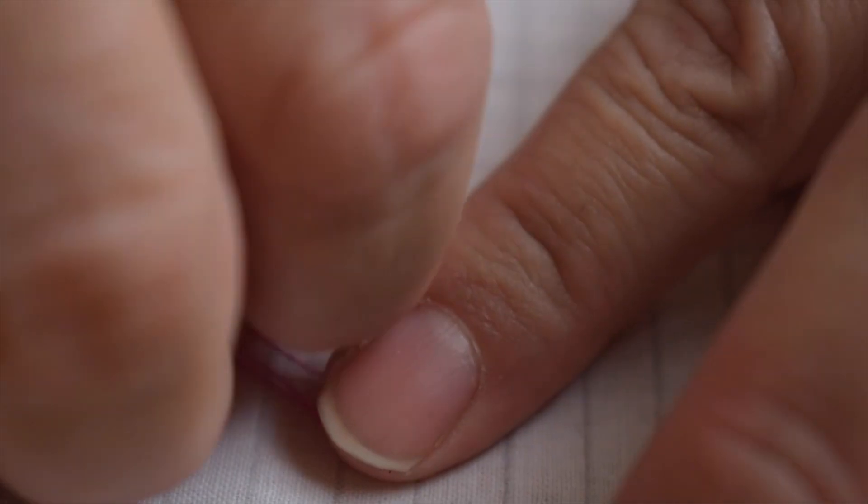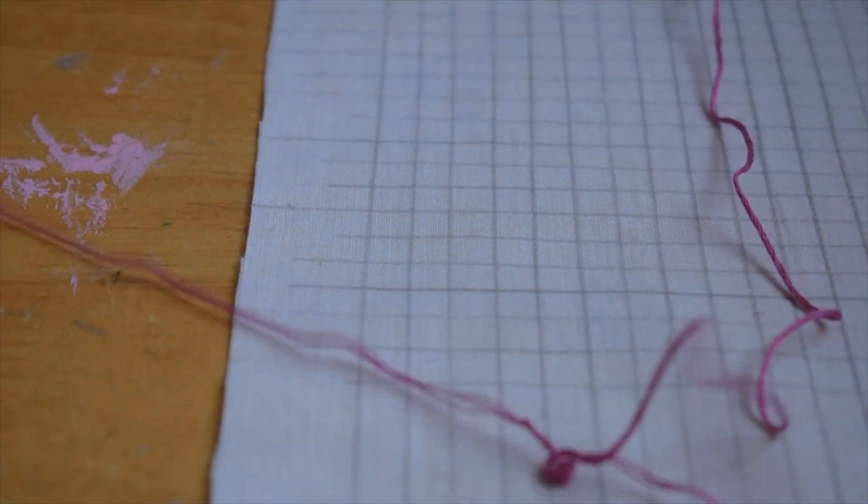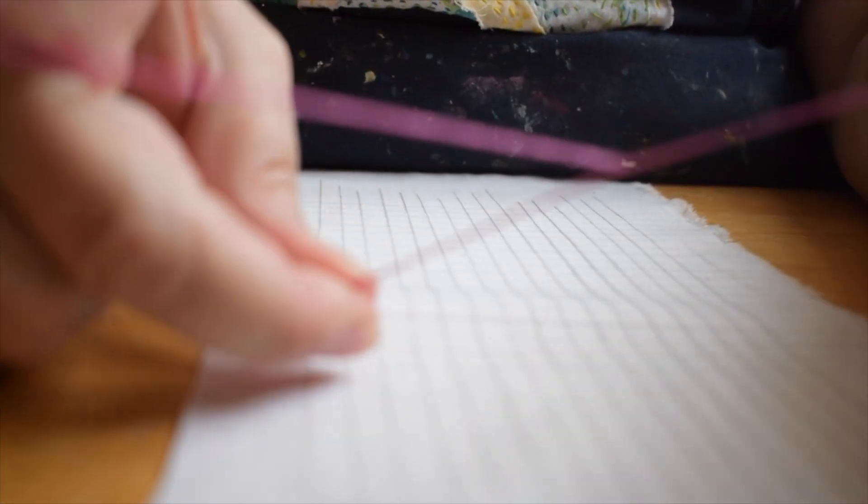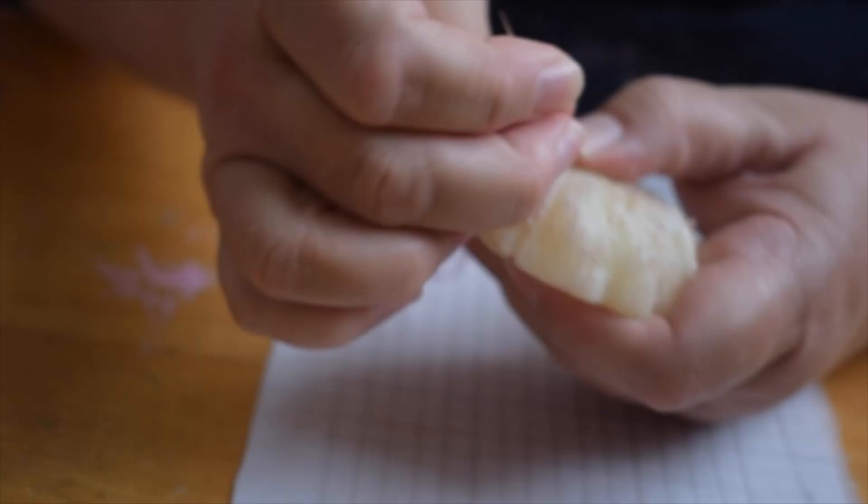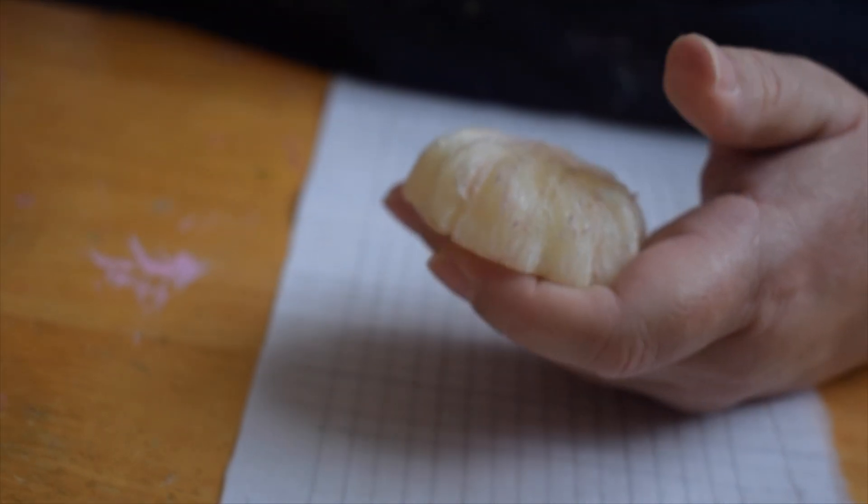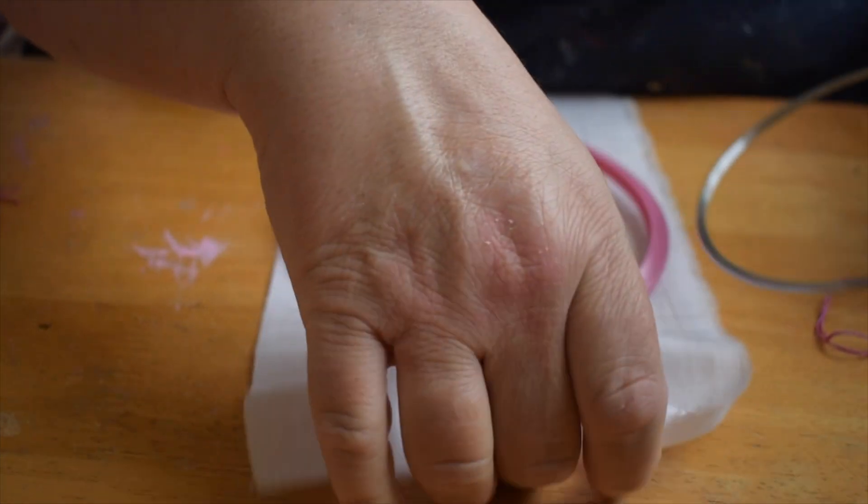So I'm using DMC embroidery floss. It comes in six strands. We're going to separate out into three strands because that's standardly used for embroidery. Depending on a pattern it might be four strands or two strands. In most cases it's three. So I've separated the thread into two sections and one section I am going to thread through a needle. Then after threading it through the needle I will use some beeswax to apply to that thread.